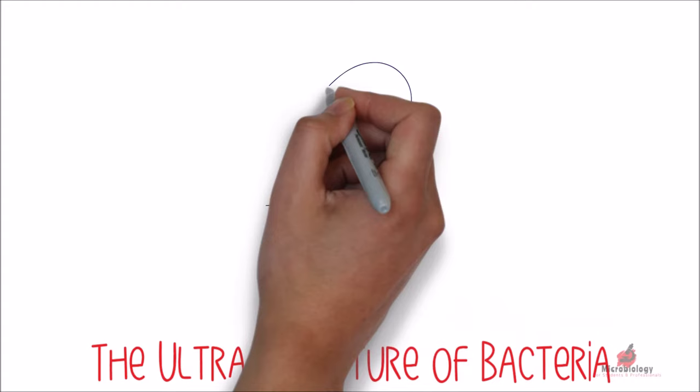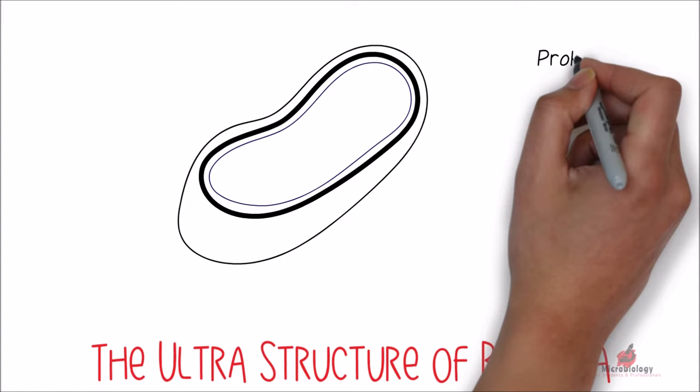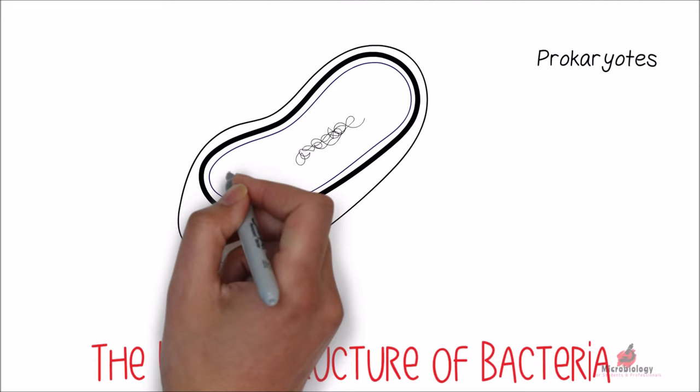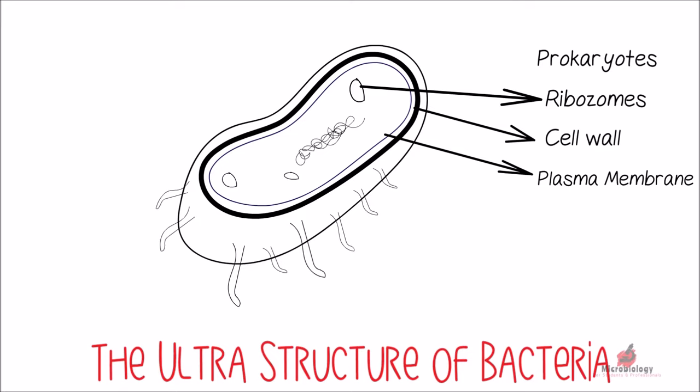The structure of a typical bacterial cell looks something like this. As the bacteria are prokaryotes, the nuclear material is not bound by the membrane. The other cell organs include ribosomes, cell wall, plasma membrane, pilus, flagellum, cytoplasm, and mesosome.